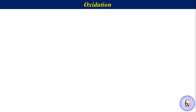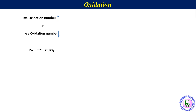Oxidation. It is the increase in the magnitude of positive oxidation number or decrease in negative oxidation number of an element during a reaction. For example, conversion of zinc metal to zinc sulphate — here the oxidation number of zinc is changing from 0 to plus 2. So there is an increase in positive oxidation number, and it is a process of oxidation.